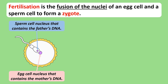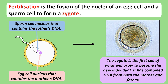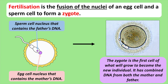One sperm cell bores its way into and penetrates the egg cell. The nucleus of the egg cell, which contains the mother's DNA, and the nucleus of the sperm cell, which contains the father's DNA, join together to create a new cell called a zygote. The zygote is the first cell of what will grow to become the new individual, and it has the combined DNA of both the mother and the father in its nucleus.